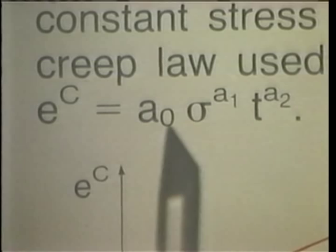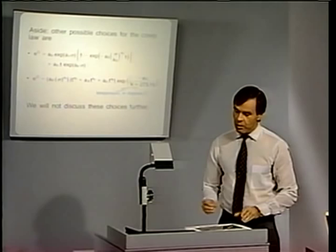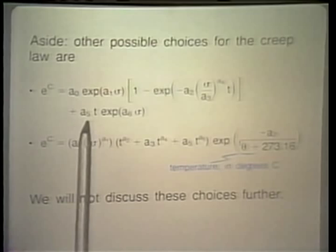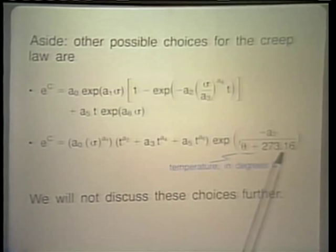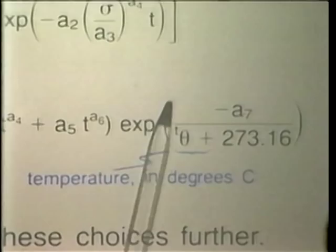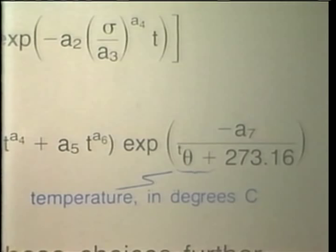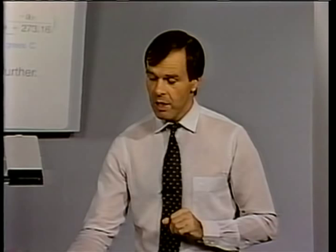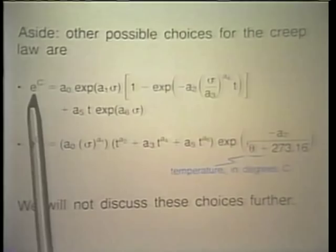There are a number of other creep laws. Two are listed here. Notice in one of them, the temperature, which affects creep strains quite heavily, enters explicitly. In the other creep laws — the power creep law and the first listed one — the constants a0, a1, a2, and so on would depend on temperature. If temperature is constant, you simply select them depending on that temperature condition. Here, however, temperature enters explicitly.